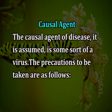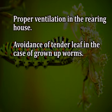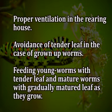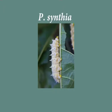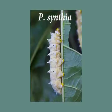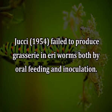Causal agent of grasserie: The causal agent of the disease is assumed to be some sort of a virus. Precautions include proper ventilation in the rearing house, avoidance of tender leaf in the case of grown-up worms, and feeding young worms with tender leaf and mature worms with gradually matured leaf as they grow. Both P. ricini and P. cynthia behave characteristically differently to grasserie disease, the former being immune and the latter receptive. Jaws in 1964 failed to produce grasserie in eri worms, both in oral feeding and inoculation.